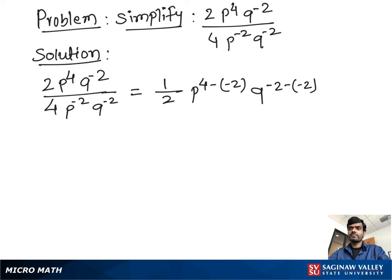So we get 1 over 2, p to the power 6, and q to the power 0. Any term with power 0 is equal to 1. So we get our final answer: p to the power 6 over 2.